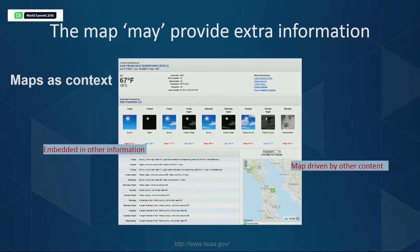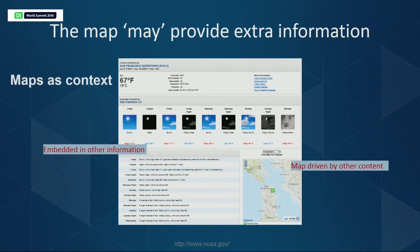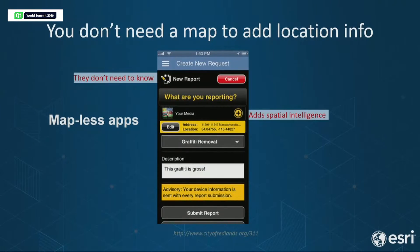Sometimes a map is really just needed for context. In this NOAA weather forecast example, you could drop the map and still understand the daily patterns being predicted — but having a map showing the area you're looking at, along with a radar image, helps give more context to the information.